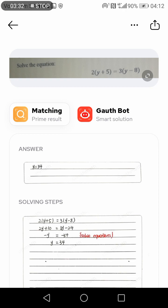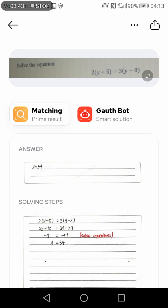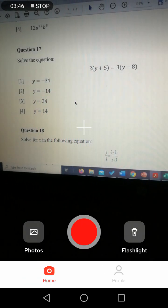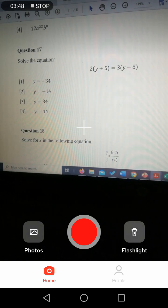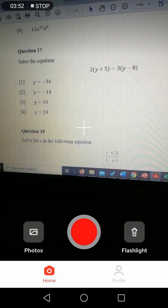So it's showing that y is equal to 34, and these are the steps. If I go back in my multiple choice, y is equal to 34, so my answer will be number three.